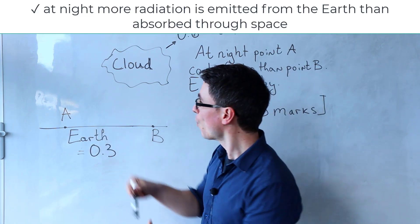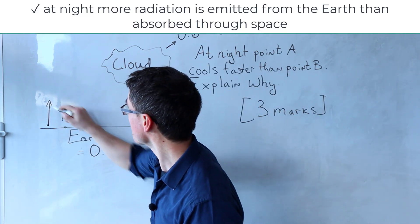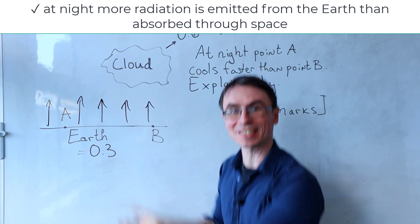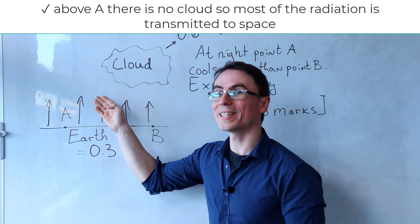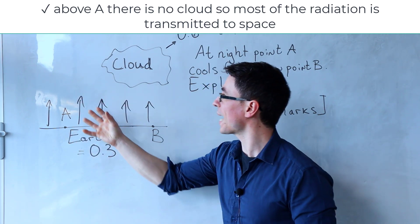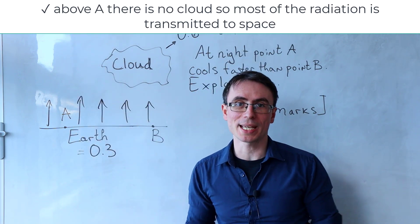First of all, at night, more radiation is emitted from the Earth. This is where all the radiation actually comes from. Above point A, there is no cloud, and most of the radiation will end up being emitted into space.